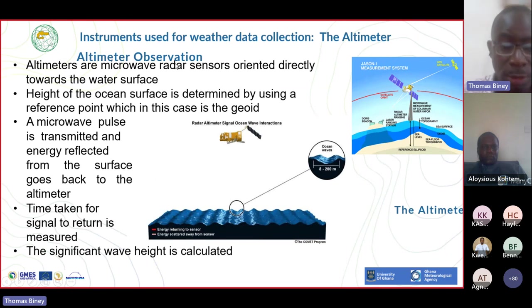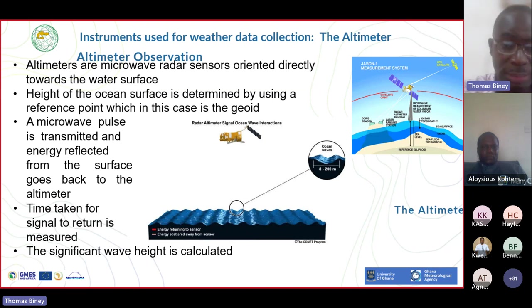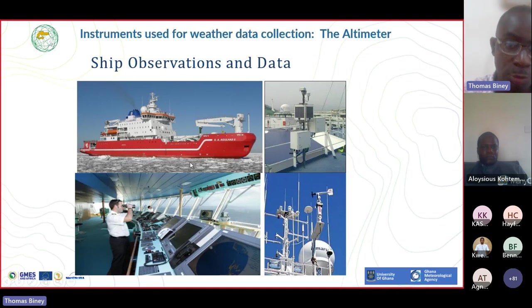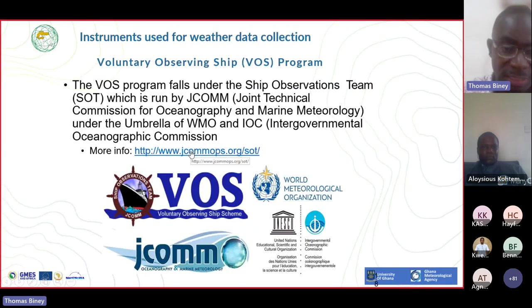The altimeter observation also uses microwave pulses transmitted down - energy reflected from the surface goes back to the altimeter, and there is an algorithm which calculates the parameter. For significant wave height and also water levels in terms of tides, it's able to use that same technique. This is a typical example of ship observation: a ship has an installed weather instrument which collects data as the ship moves. We have a lot of voluntary observing ships in and around our waters that transmit data as they go about their activities.